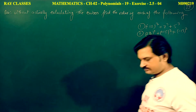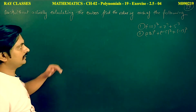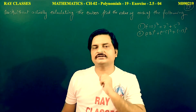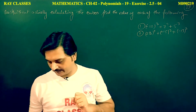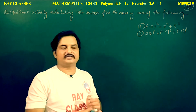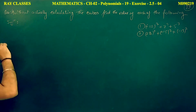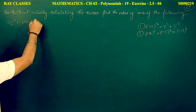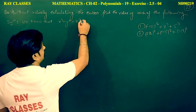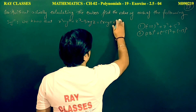This is question number 14. Without actually finding the cubes, you have to find the value — that means you should not use the cube formula directly. Questions 12, 13, and 14 are completely interrelated. We know that x cubed plus y cubed plus z cubed minus 3xyz equals (x plus y plus z) into (x² plus y² plus z² minus xy minus yz minus zx).